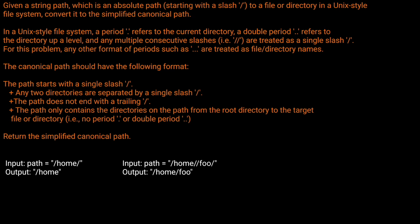Looking at our examples: given path equals slash home slash, we should return slash home. Why do we get rid of the trailing slash? Remember, the path does not end with a trailing slash. What about slash home double slash foo slash? We get rid of the trailing slash, and we need to treat the double slash as a single slash.